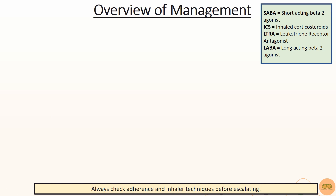This is an overview of the pharmacological management of chronic asthma in primary care. There are multiple steps a GP can prescribe before referring patients to the specialists. Remember to always check for adherence and inhaler techniques before escalating.